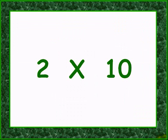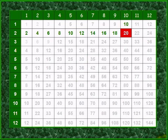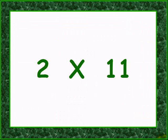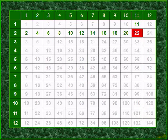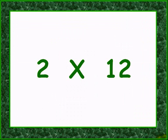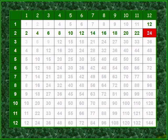Adding two times nine gives eighteen. Adding two times ten gives twenty. Adding two times eleven gives twenty-two. Adding two times twelve gives twenty-four.